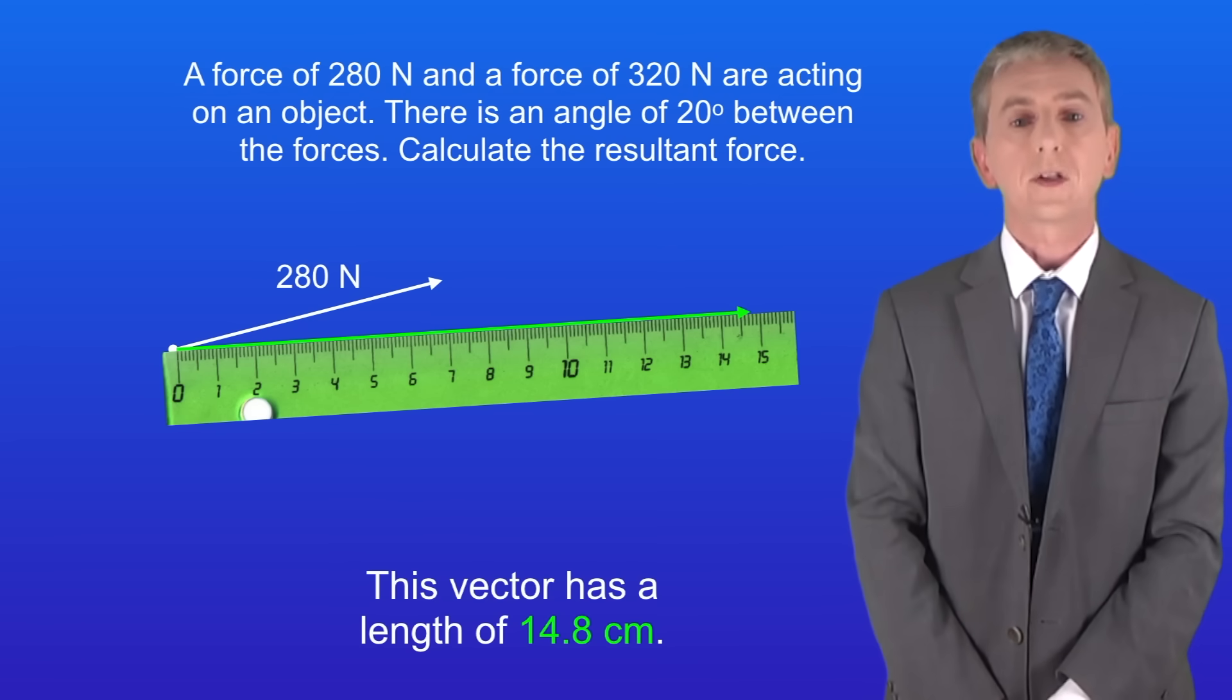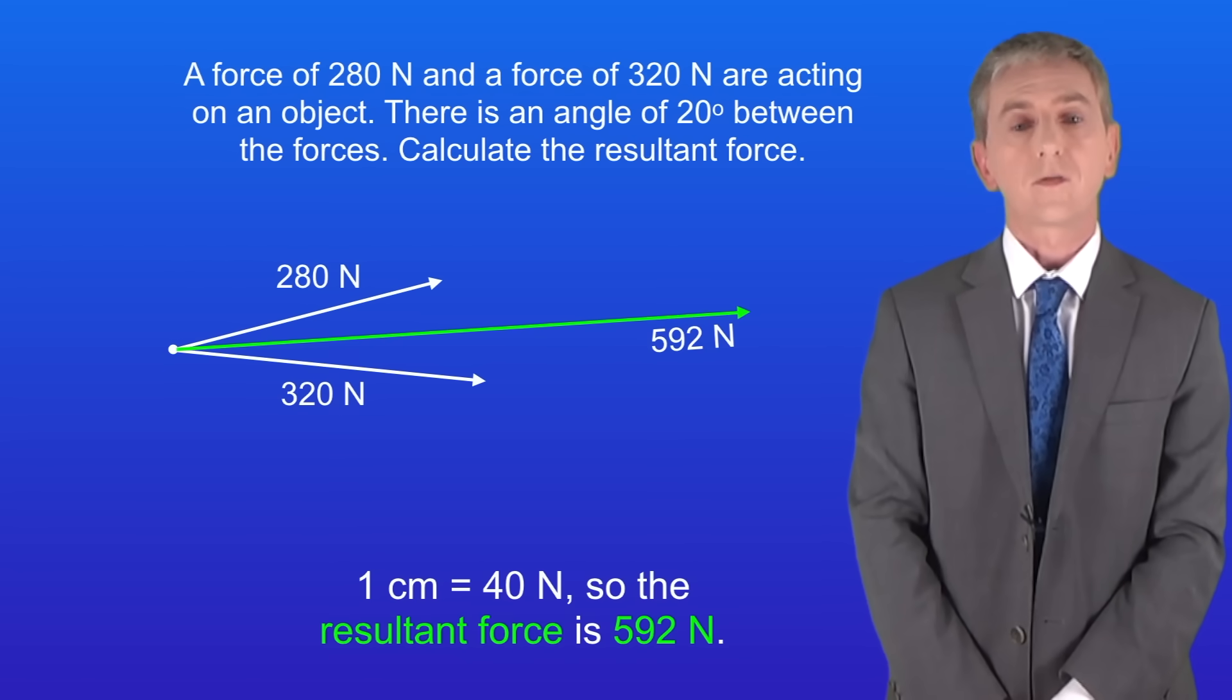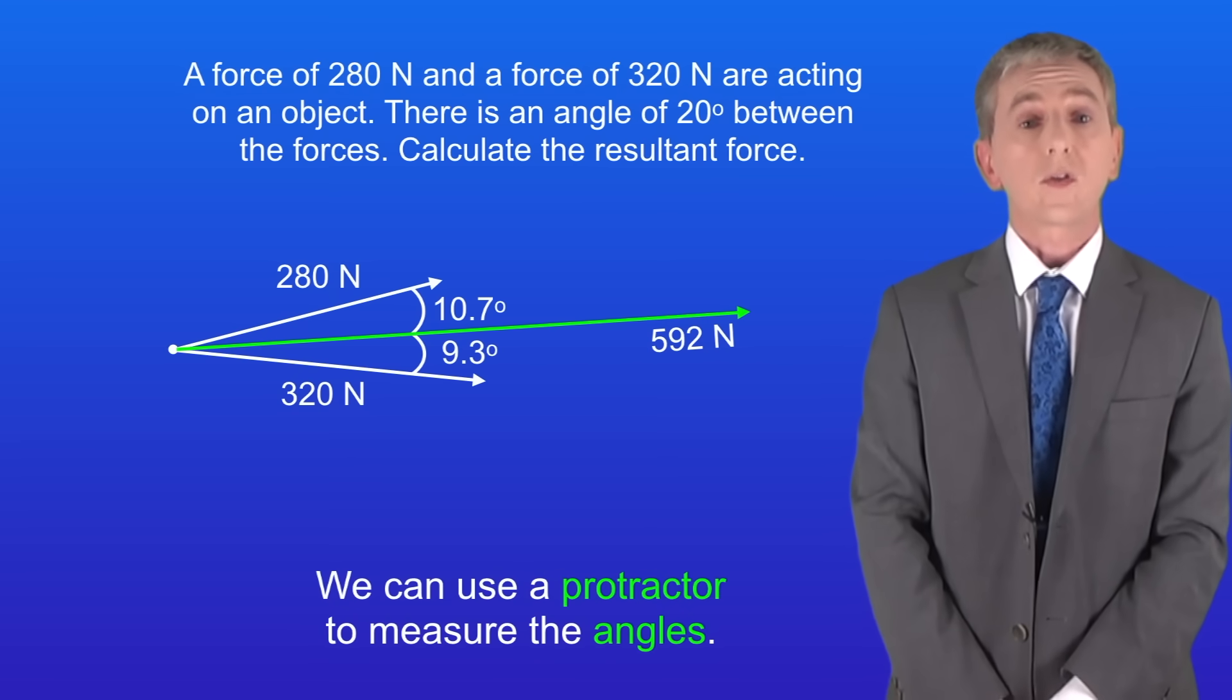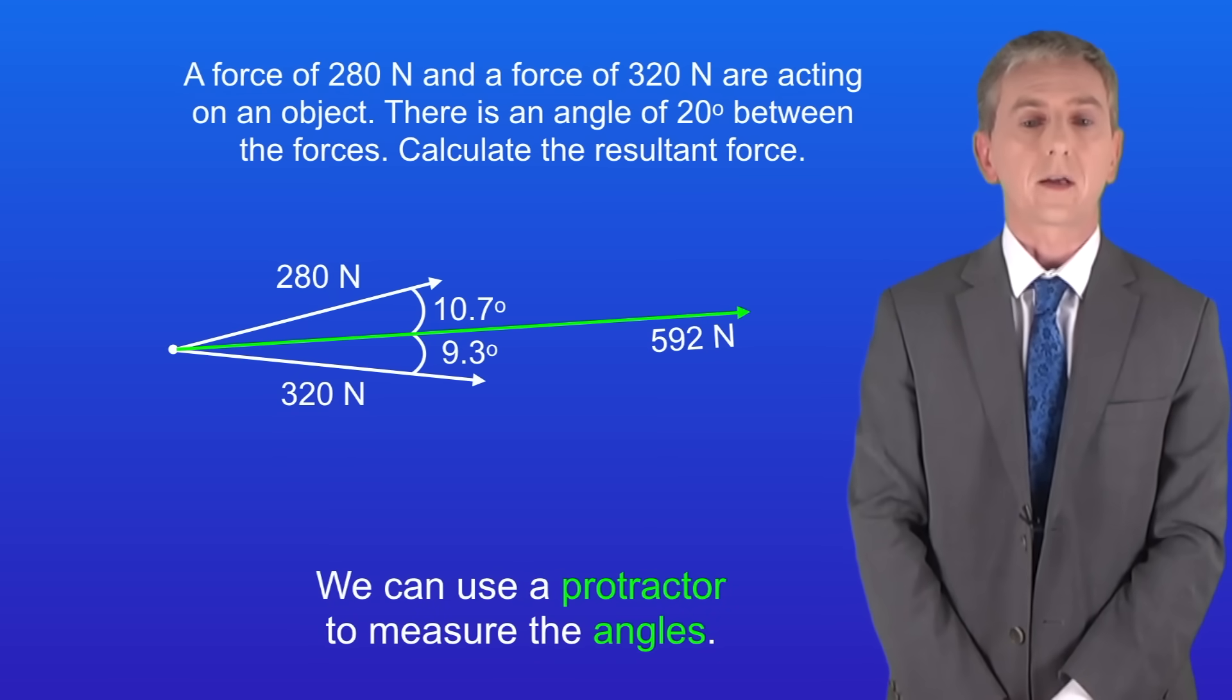Remember that 1 centimeter equals 40 newtons, so the resultant force is 592 newtons. And once again we can use a protractor to measure the angles, and here they are.